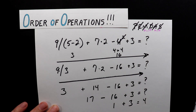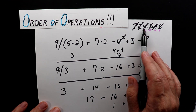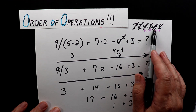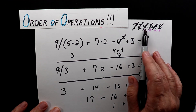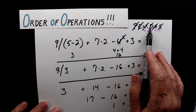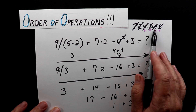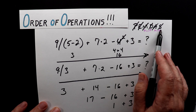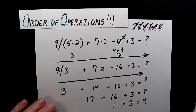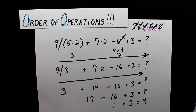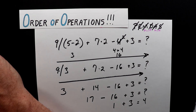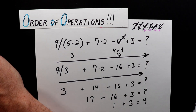Be careful with these — it takes practice to remember them. PEMDAS: multiplication and division are interchangeable, and addition and subtraction are interchangeable. Always work left to right when applying those pairs.